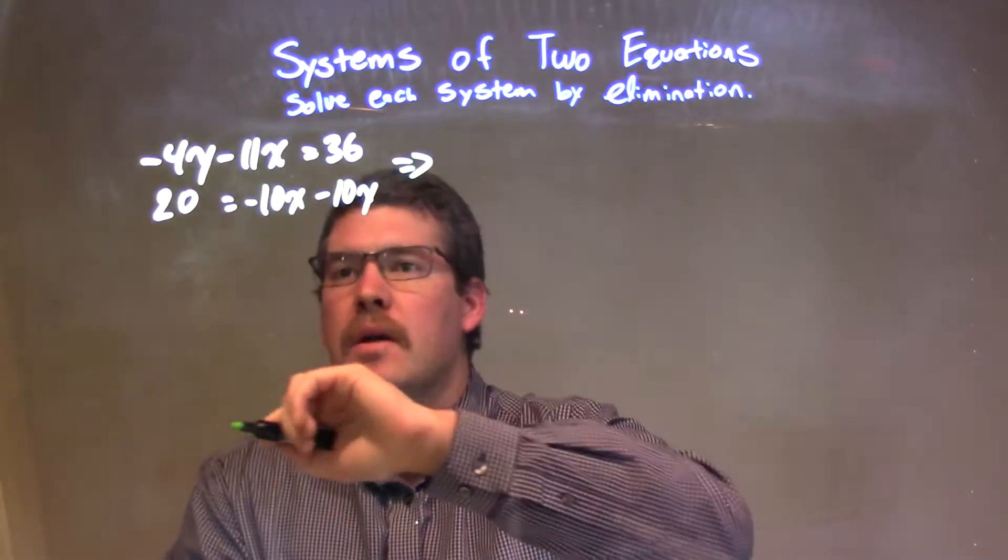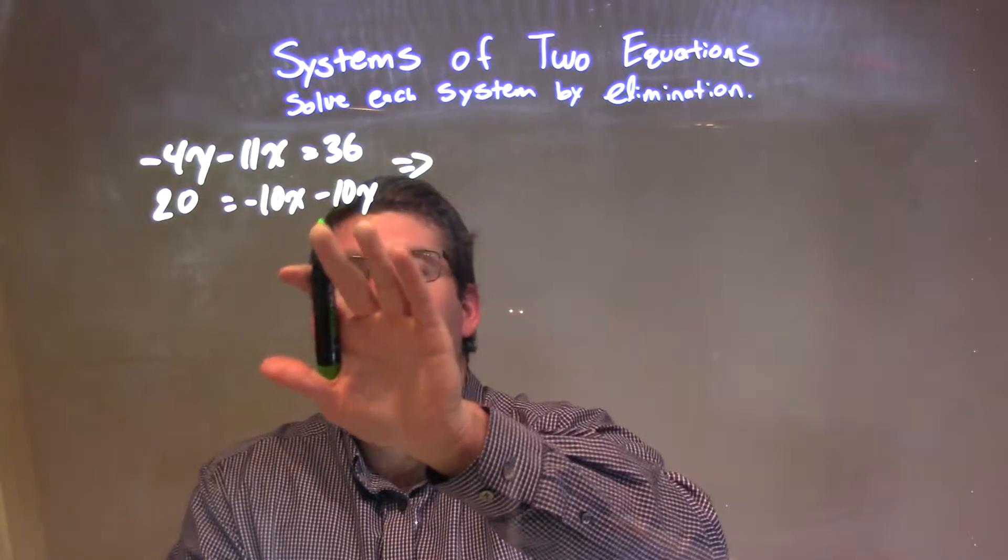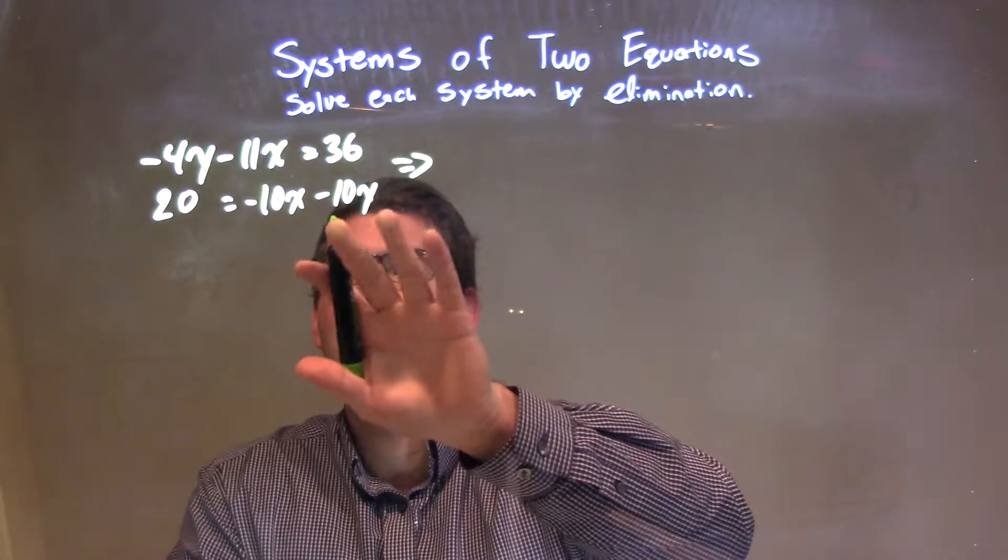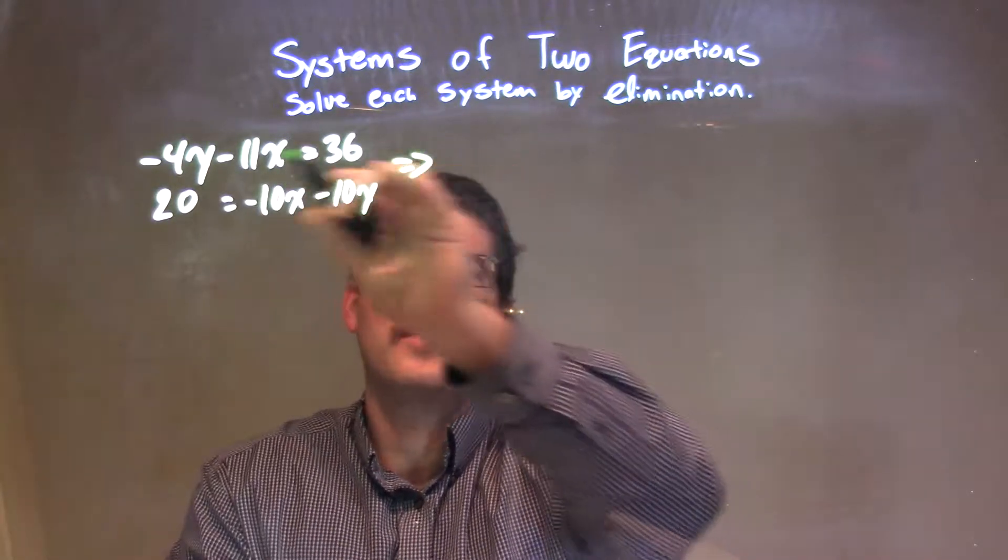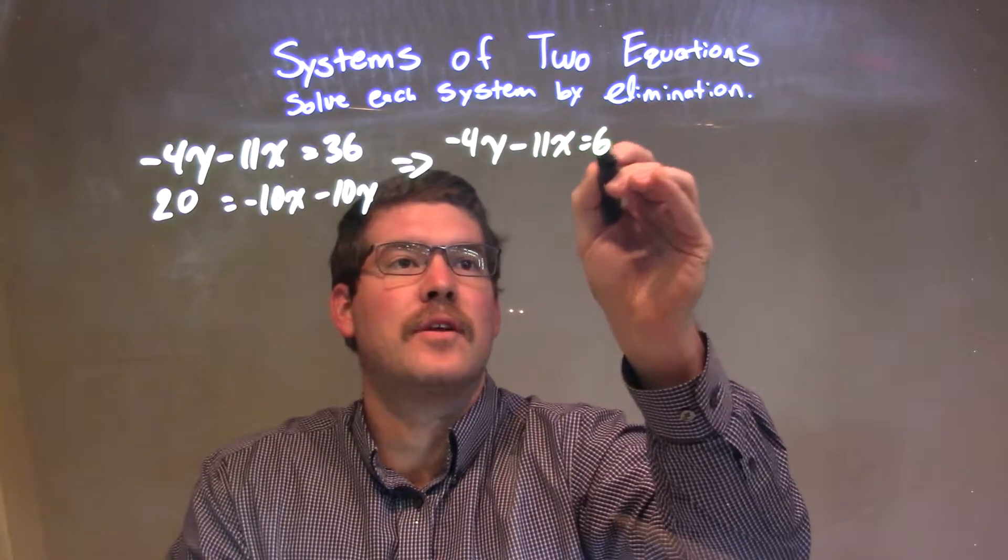Let's go over here and rewrite it. What I can do here, I'm going to leave the numerator for the top equation, negative 4y minus 11x equals 36.